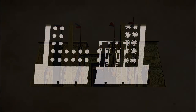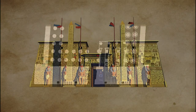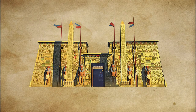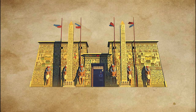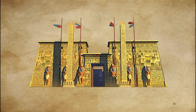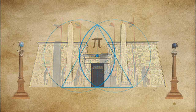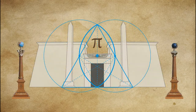Here we are outside the entrance gateway to the temple. First off we have an image of what it might have looked like in its heyday. We must remember that no symbol, color, or statue is arbitrary — everything means something, every item is a thread within a greater tapestry of knowledge. One of the first things we can see is that it is constructed around sacred geometry.